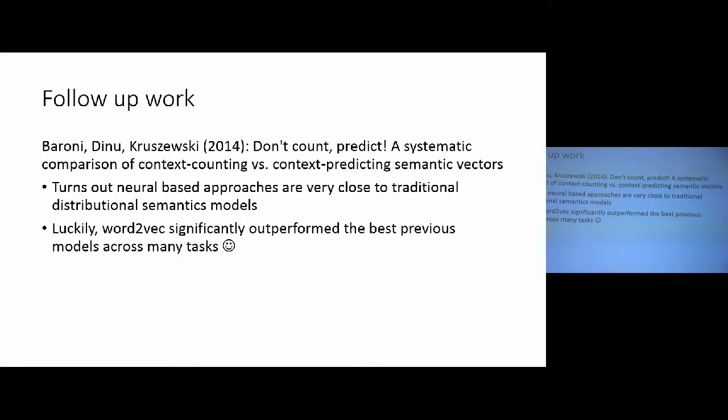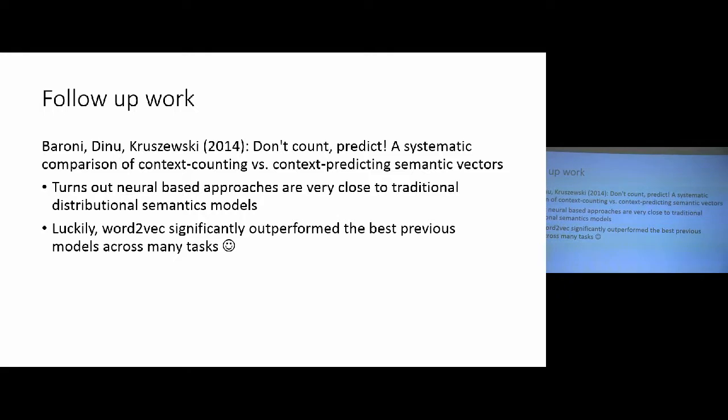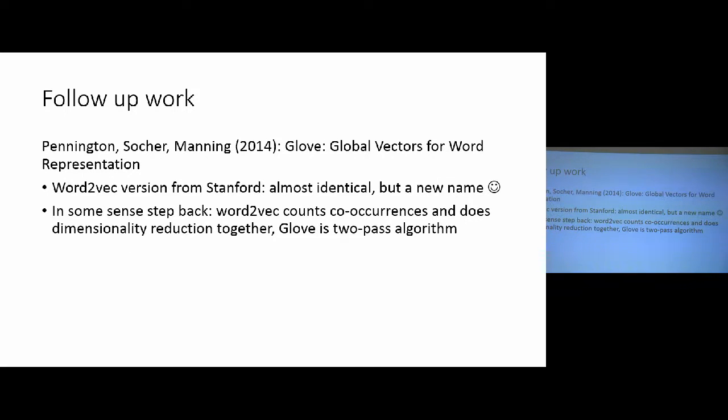Of course, there was some follow-up work. There was this interesting paper that showed that these neural-net-based models are actually very related to the traditional distributional semantics models that actually I wasn't aware of. My main motivation for Word2Vec was to show that shallow models can work very well and we don't really need deep learning for everything. And it's good to understand what the models are doing because then we can actually optimize them much better. And it turned out actually that these traditional distributional semantics models were not as good as Word2Vec across quite a few tasks that Marco Baroni and his students did try. So I think we were kind of lucky with this because we should have done this comparison ourselves, but it turned out to be good for us.